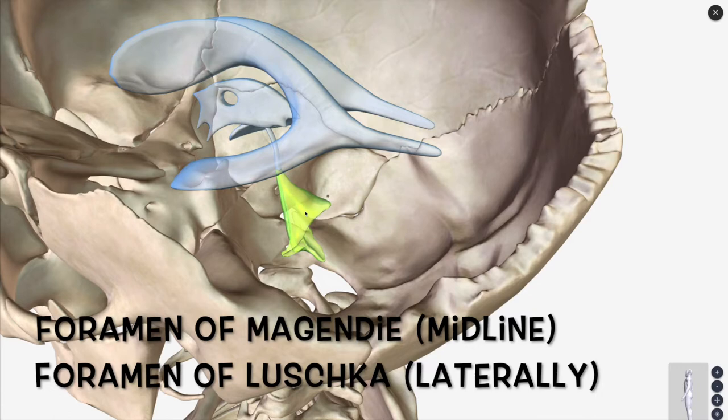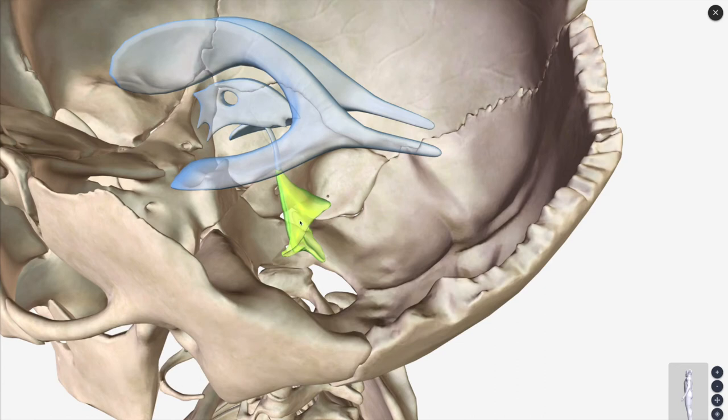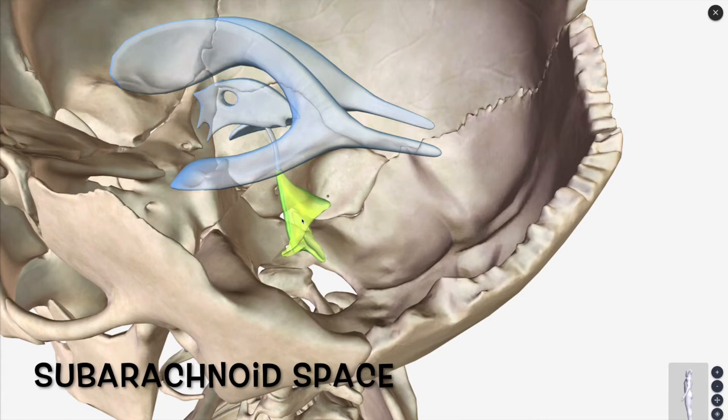Where does it enter after the fourth ventricle? That's going to be your subarachnoid space. It's going to enter your subarachnoid space.